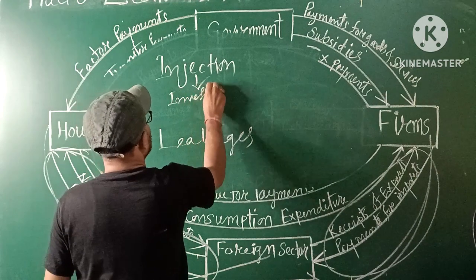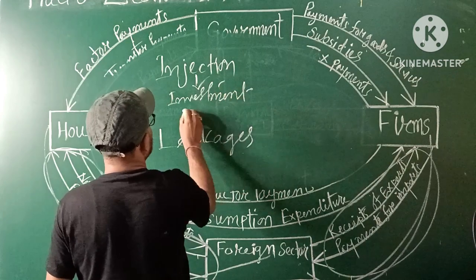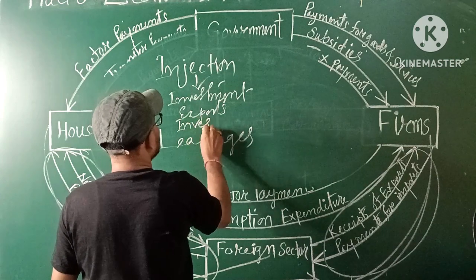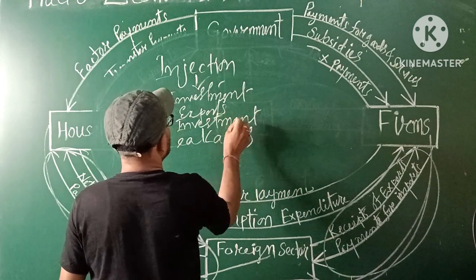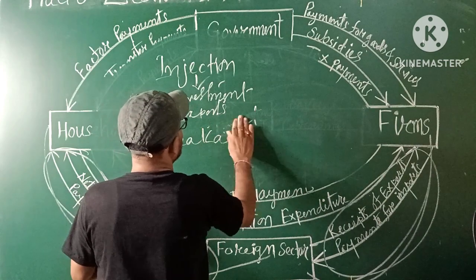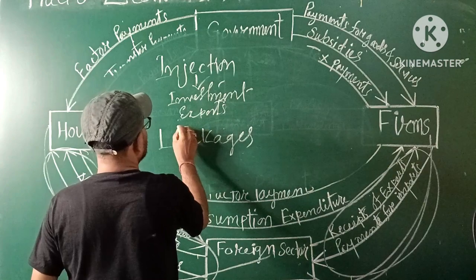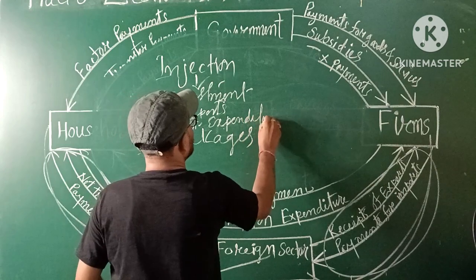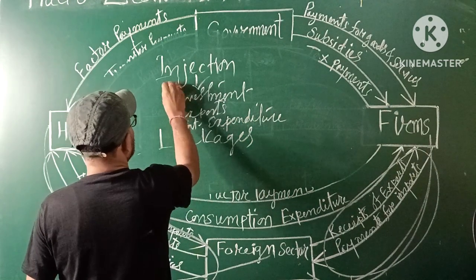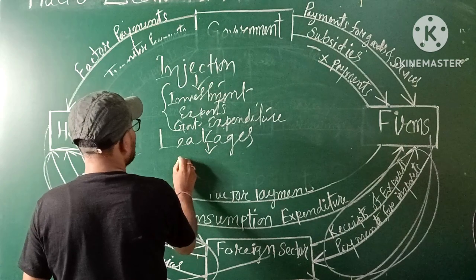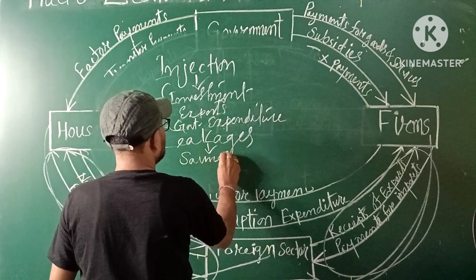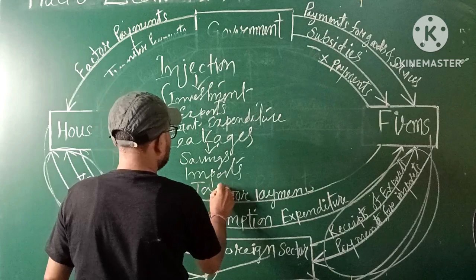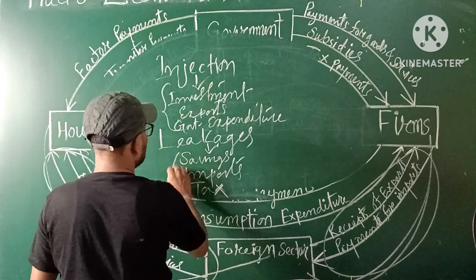Let me give you examples. Injections include: Investment, Exports, and Government Expenditure. Leakages include: Savings, Imports, and Tax. These are the key examples of injections and leakages in the four-sector circular flow.